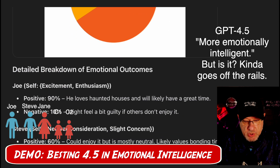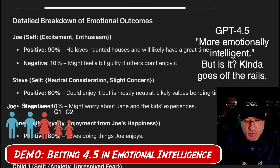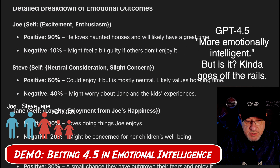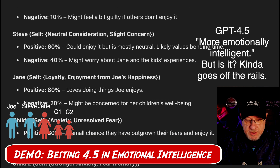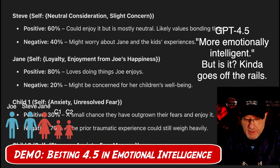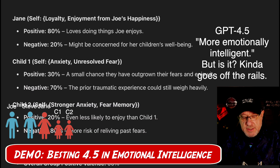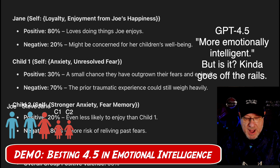Here's the detailed breakdown of emotional outcomes. Joe has a 90% positive reaction — he loves haunted houses — versus 10% negative, meaning he might feel guilty if others don't enjoy it. Steve is less positive; he could enjoy it but is mostly neutral and likely values bonding time. Jane's reaction is a little counterintuitive because she loves doing the things that Joe enjoys, but Joe didn't register that positively for the haunted house in the first place.